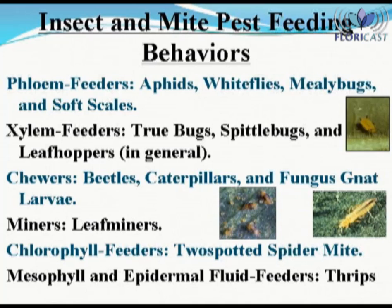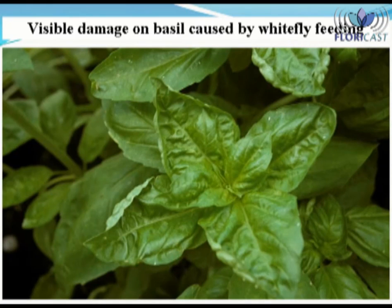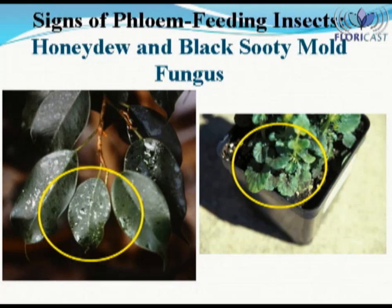Each feeding behavior will result in distinct characteristic plant symptoms that may be used to diagnose which insect and or mite pest is causing the problem. Because phloem feeders such as aphids, whiteflies, and mealybugs are removing the food from plants, the typical symptoms expressed by plants are stunting, wilting, leaf yellowing, and leaf distortion, as shown in this image of basil infested with whiteflies. A typical sign or secondary damage caused by most phloem feeding insects is the presence, on plant parts, of honeydew — a clear sticky liquid, shown in the image on the left — and or black sooty mold fungus, represented by the image on the right.